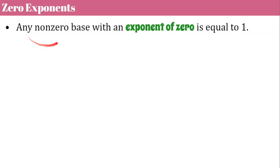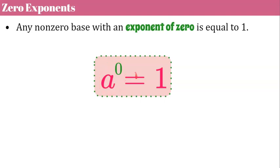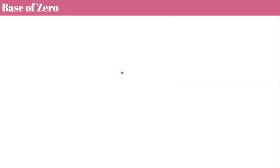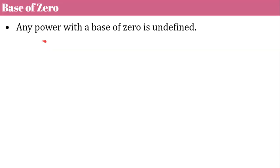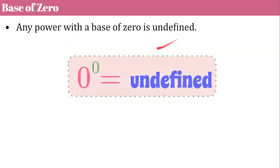Zero exponents: any nonzero base with an exponent of zero is equal to one. Very important that we consider nonzero. This is a to the zero is our power and it is equal to one. So any base of a except zero, any value except zero, is equal to one when raised to an exponent of one. So base of zero, any power with a base of zero is undefined. So zero to the zero is undefined.